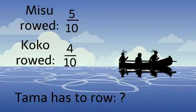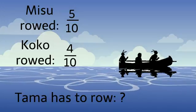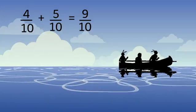And now we can go ahead and compare both fractions by adding them. 4-10ths plus 5-10ths equals 9-10ths. So Misu and Koko rowed 9-10ths of the way.